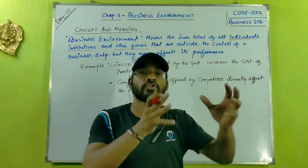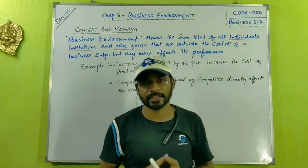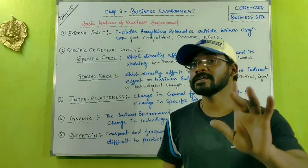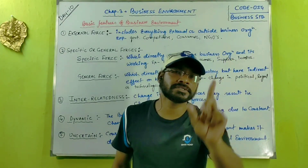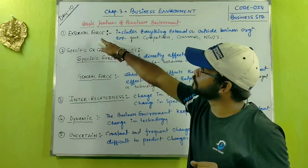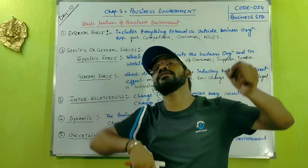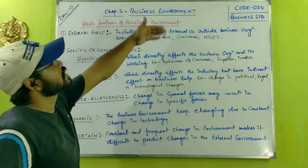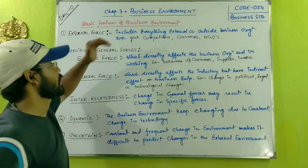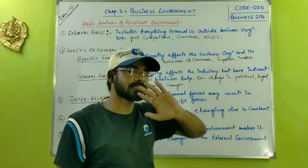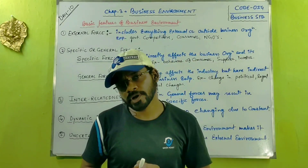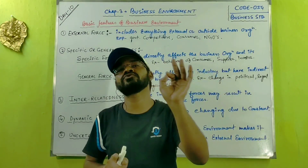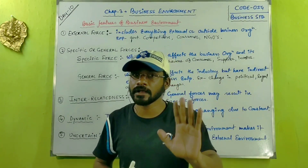Now let's discuss the features of business environment. The first feature: business environment is an external force — forces beyond the control of the business organization. For example, a business cannot control where its customers go or from where they purchase goods and services. These are forces beyond the control of the business.